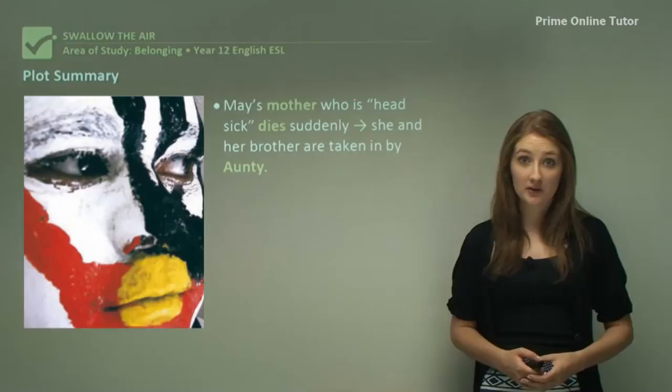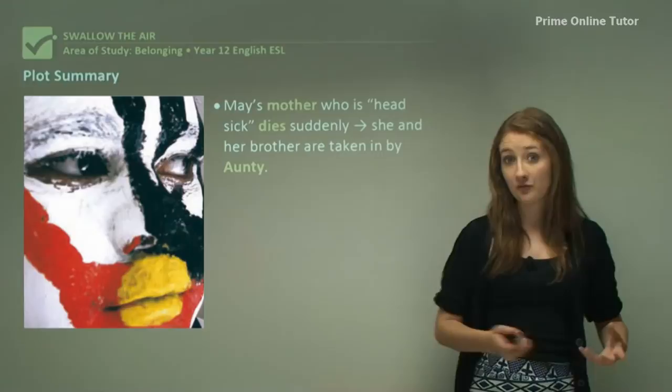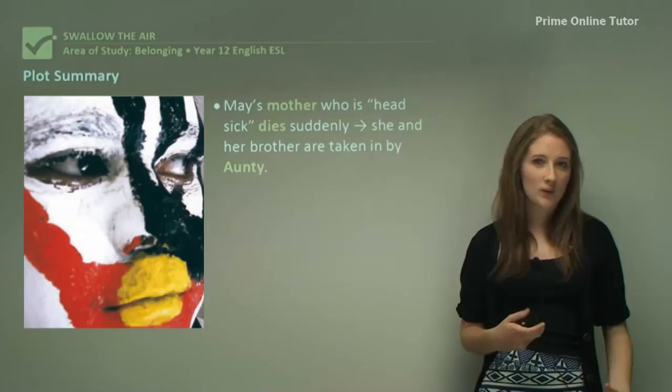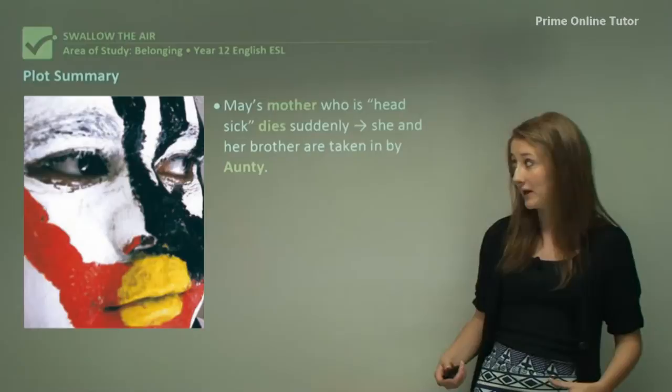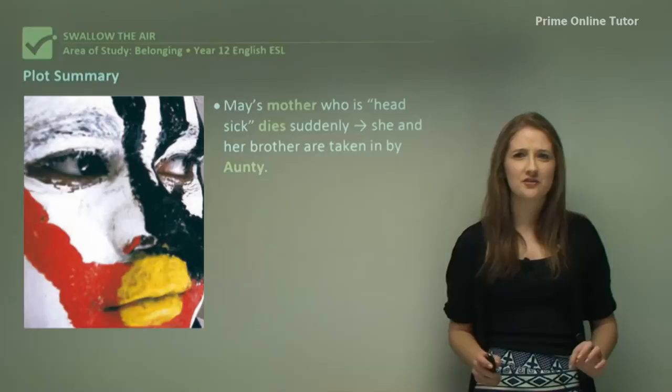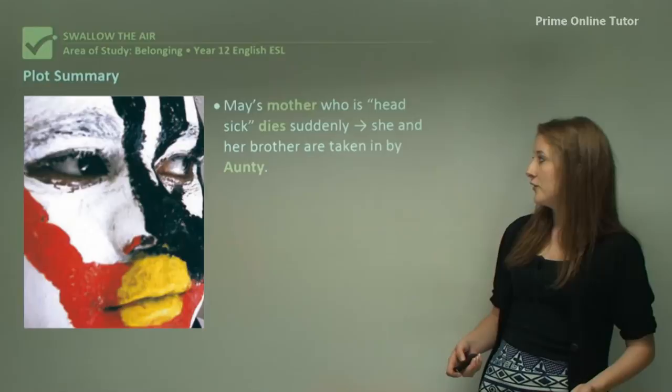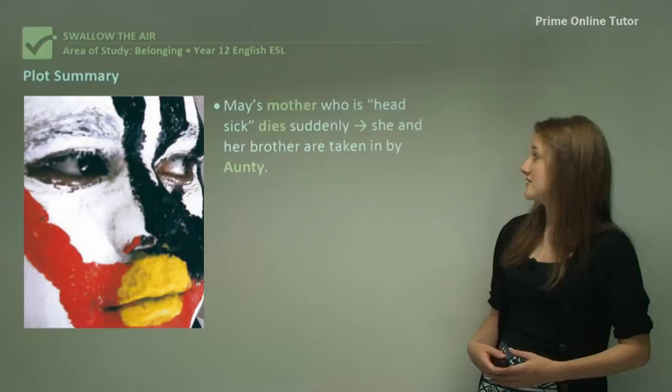Let's begin by looking at a plot summary. Once you're reading a novel, the plot isn't the most important thing when you're writing your essay — the most important things are your understanding of the language, the themes, and the characters. However, having this basic plot summary is really useful to get used to the ideas of this text, especially because it's a little bit complicated. Basically, May's mother, who is head sick — suggesting some sort of mental illness — dies suddenly.